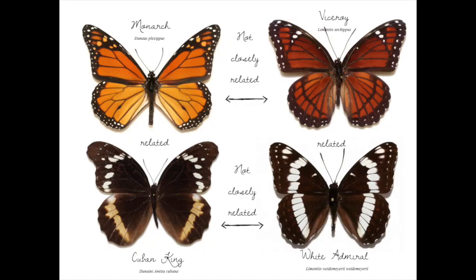This work gives credence to Nabokov's idea that given the constraints on pattern formation, natural selection would not be necessary to explain how, say, the monarch and viceroy butterflies — which are supposed to be mimics — came to look like each other. The monarch and viceroy butterflies on the top here are from two different genera. On the bottom left is a Cuban king, a relative of the monarch. On the bottom right is a white admiral, a relative of the viceroy.